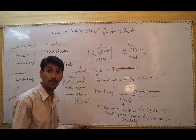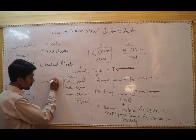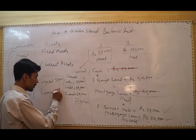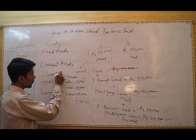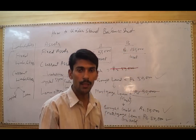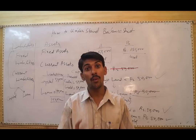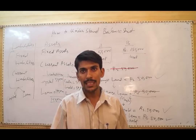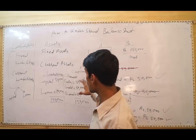My balance sheet now shows: cash fifty thousand, gold fifty thousand, and land fifty thousand — totalling one lakh fifty thousand in assets. But my own capital is only fifty thousand. The next amount is loan. So my balance sheet shows one lakh fifty thousand even though my real capital was just fifty thousand. You have to see whether the money is taken from capital or from loan.